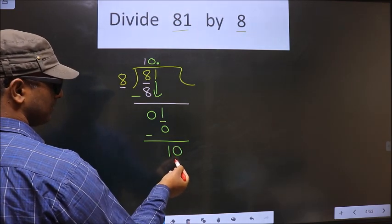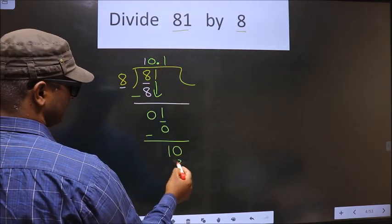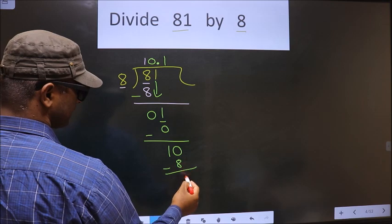So, now here we got 10. A number close to 10 in 8 table is 8 once 8. Now, 10 minus 8 is 2.